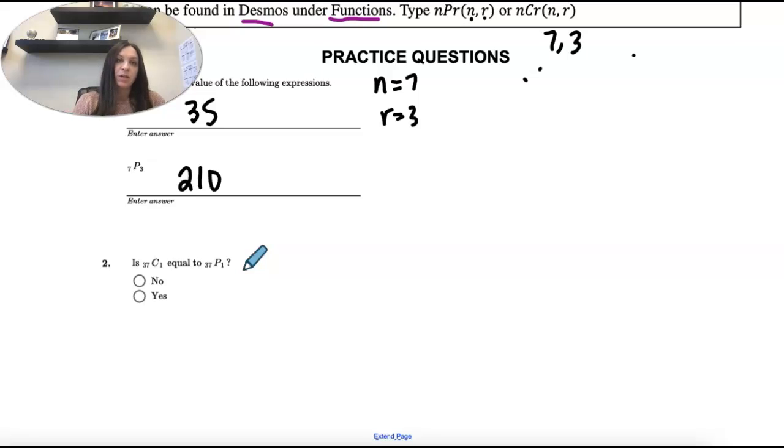So let's put in Desmos, we're taking n equals 37 and r equals 1. So when you type that in Desmos, you're going to get nCr, and you need to type in the n and r.